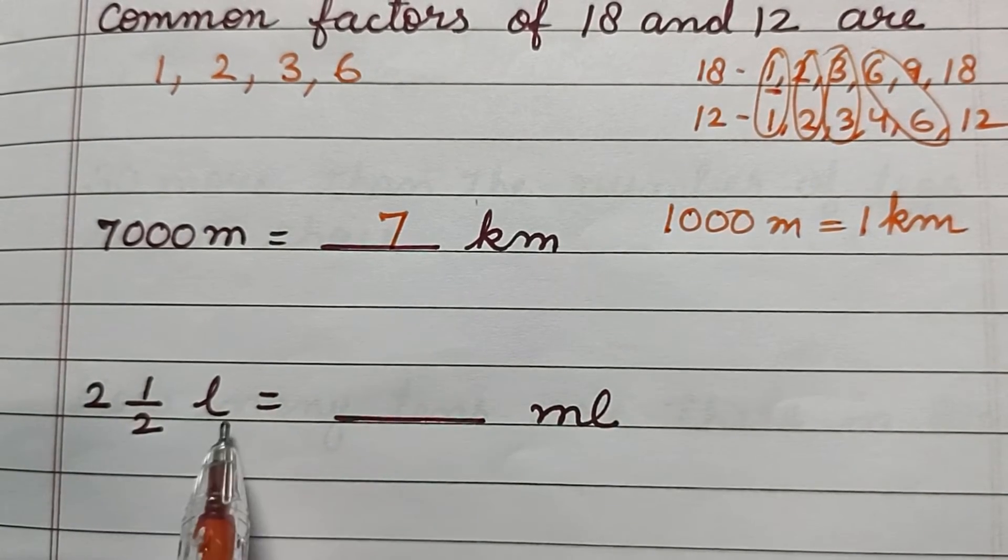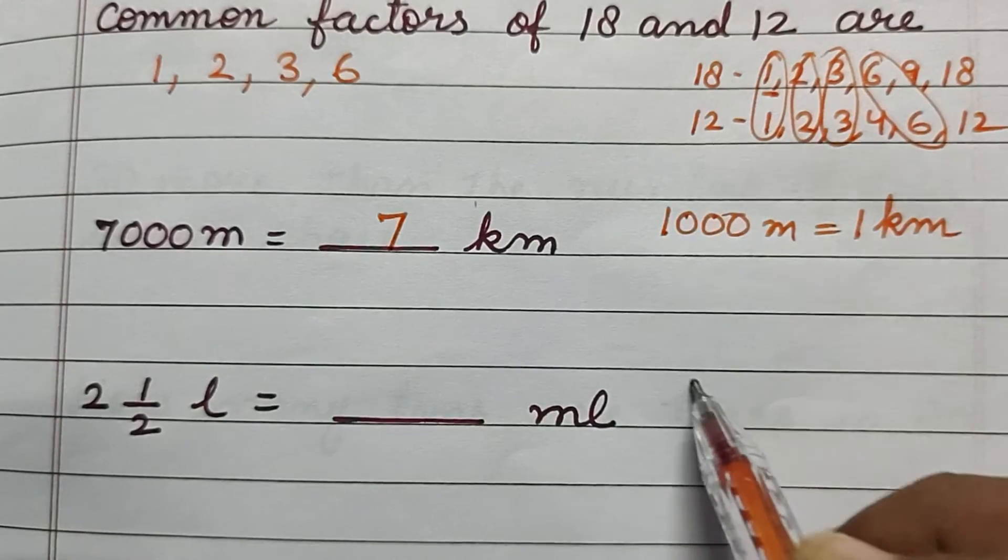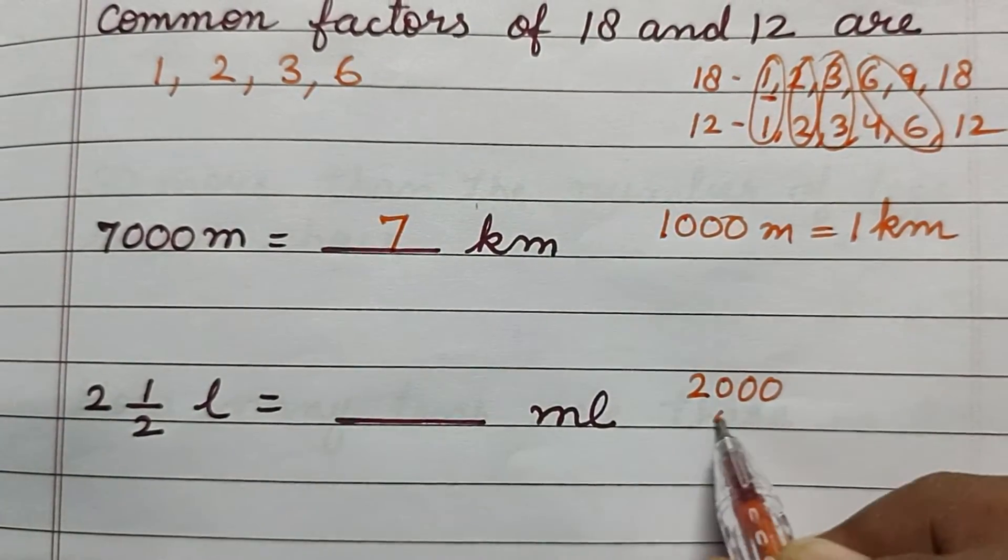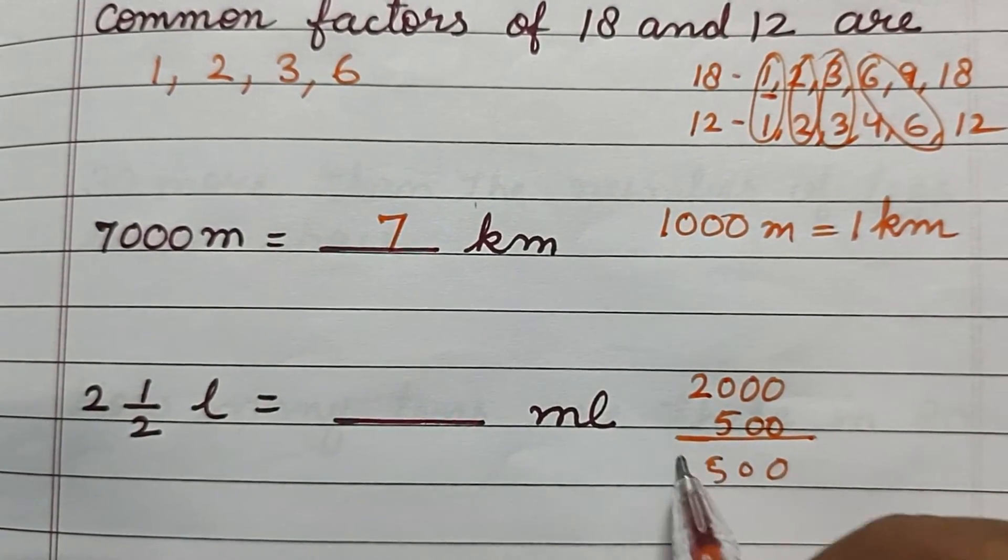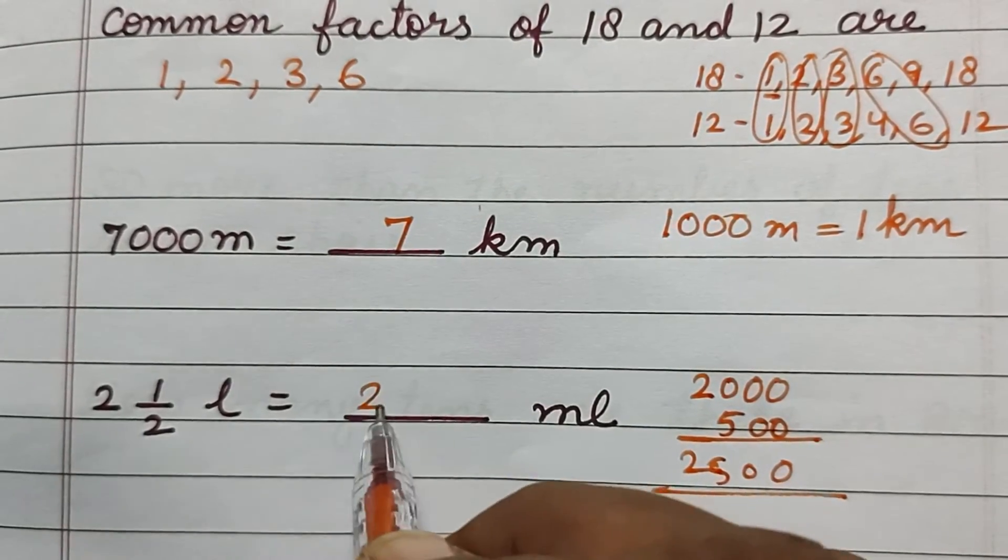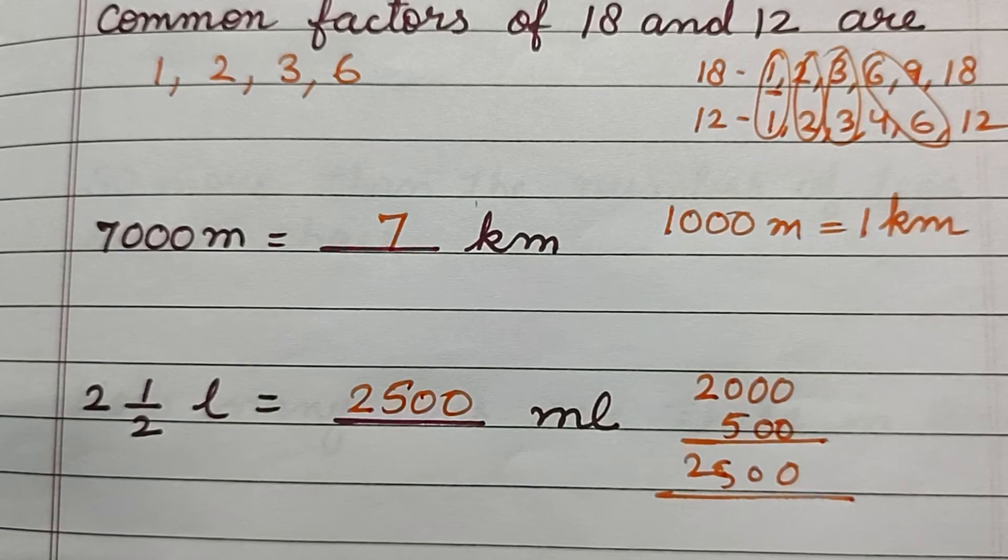2 and a half liters. 2 liters and half liter. 2 liters means 2000 milliliters, half liter means 500 milliliters. We will add 2000 and 500, so 2 and a half liters is equal to 2500 milliliters.